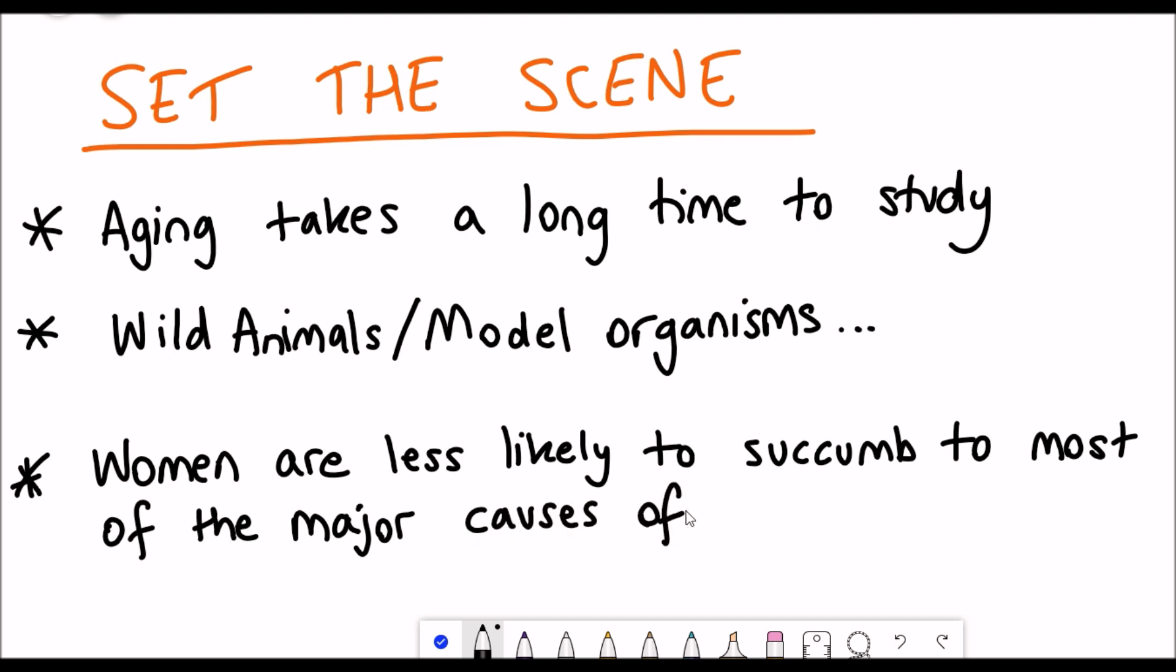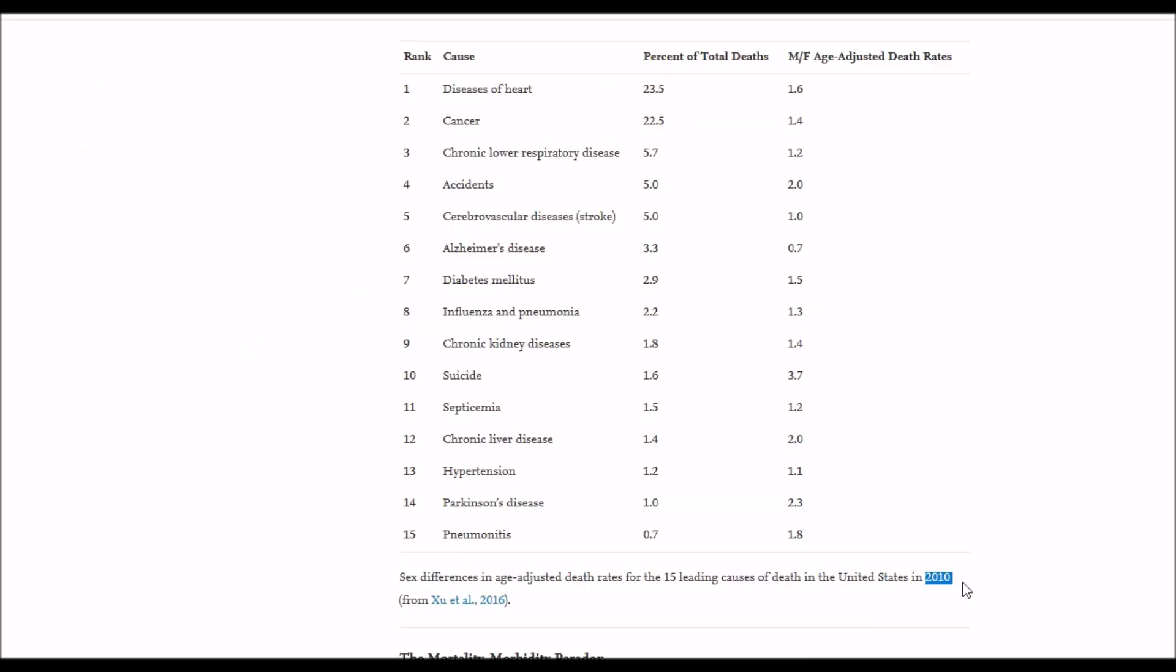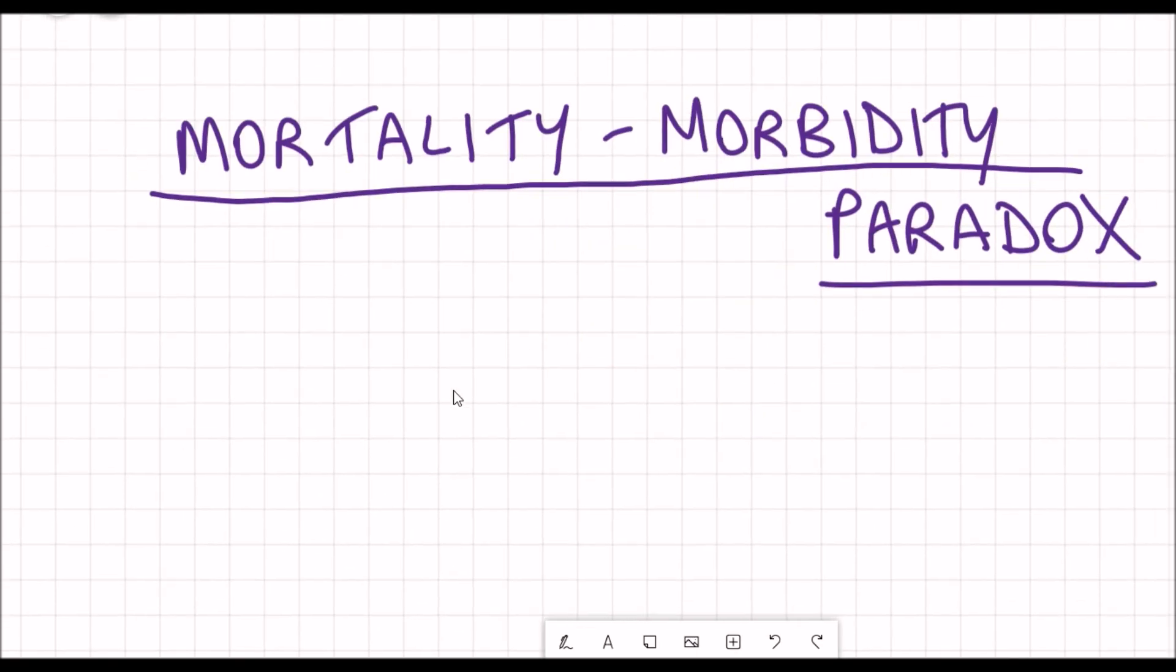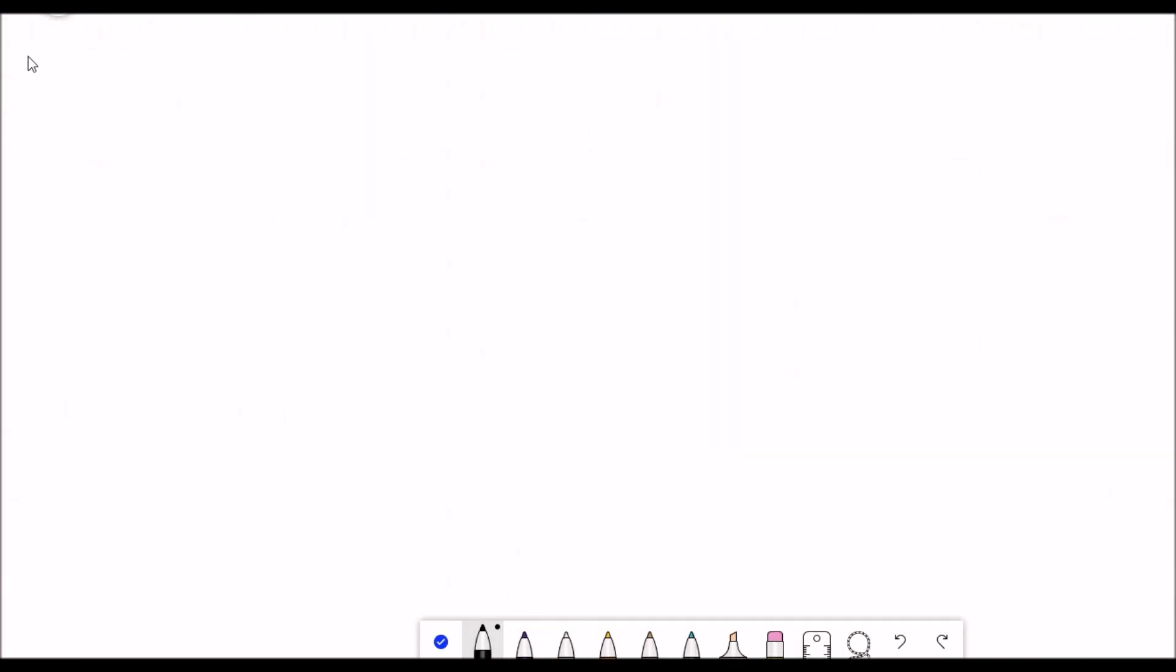Interestingly, studies have shown that women are less likely to succumb to most of the major causes of death. So if you look at the top 15 causes of death in the US, 13 out of 15 of them the rate of death is higher in males than females. Interestingly for stroke it was found to be the same, and even more interestingly the rate was higher for women for Alzheimer's disease. So that kind of relates back to this mortality morbidity hypothesis which we will return to at some point. This information came from this table which is in one of the references and in the description if you can't see it on here, it's quite small I think.